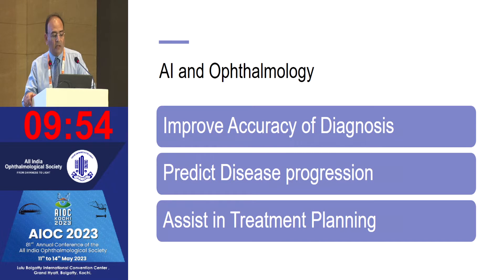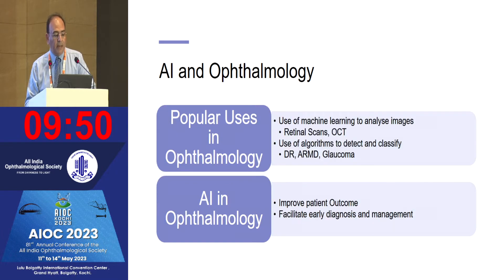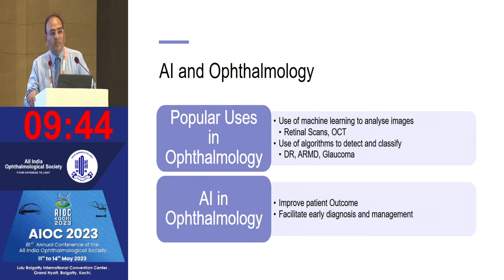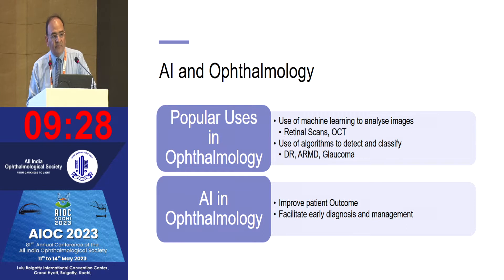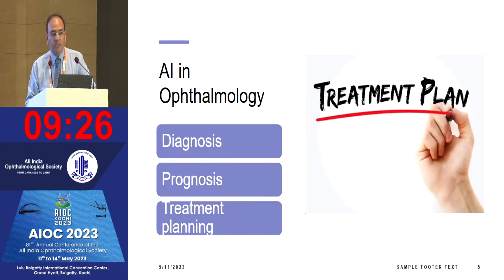Artificial intelligence has improved accuracy in diagnosis, predicting disease progression, and has assisted in treatment planning. AI algorithms are being used in machine learning to analyze images such as retinal scans and OCT, and we have been using algorithms to detect and classify diabetic retinopathy, ARMD, and glaucoma. Overall, it has improved patient outcomes and facilitated early diagnosis and management.